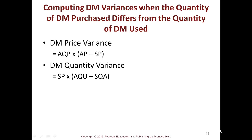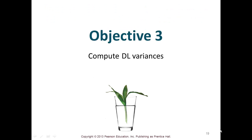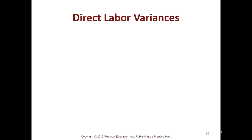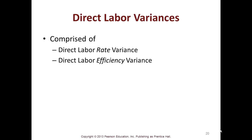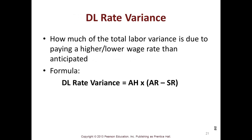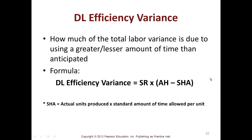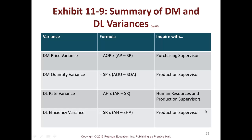Now we compute direct labor variances — same concept, just labor versus materials. You get a direct labor rate variance and a direct labor efficiency variance. The direct labor rate variance formula is: actual hours times (actual rate minus standard rate). The efficiency variance formula is: standard rate times (actual hours minus standard hours allowed). This is on page 667, Exhibit 11-9, so you may want to add these to your cheat sheet.